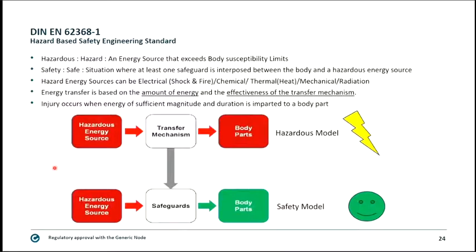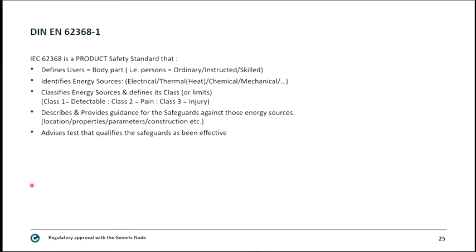Energy transfer depends on the amount of energy and the effectiveness of the transfer mechanism. IEC 62368-1 is a product safety standard that defines users and body parts, energy sources and their classes, and provides guidance and qualifying tests for safeguards against those energy sources.